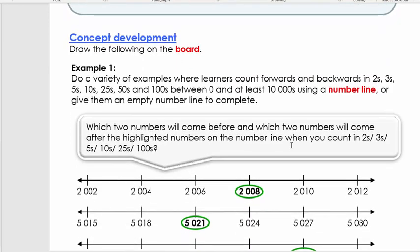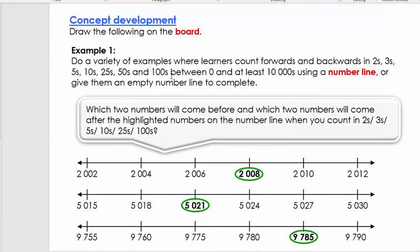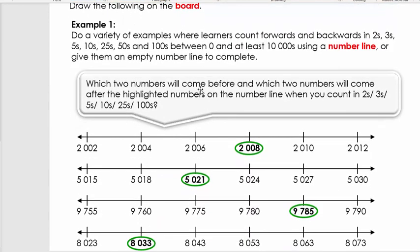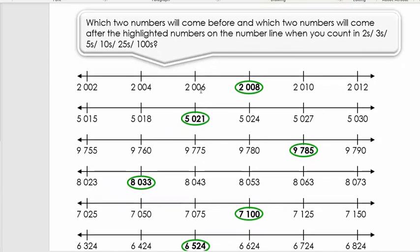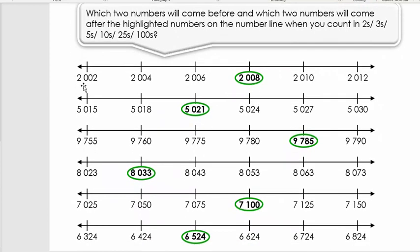So we're going to scroll down. You can read the beginning and the examples. But what we're going to do is we're going to look at these number lines. Now each of these number lines there is a number circled. So we're going to look at the number that's circled and then we're going to ask the learner to tell us what is the number before and after.